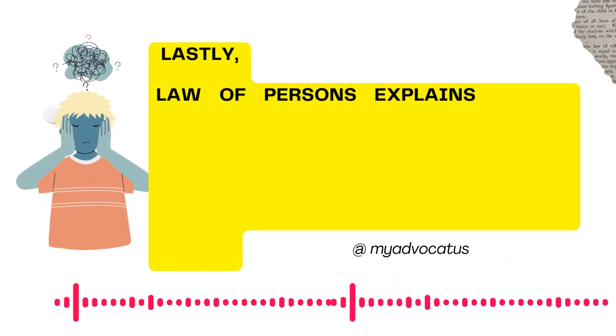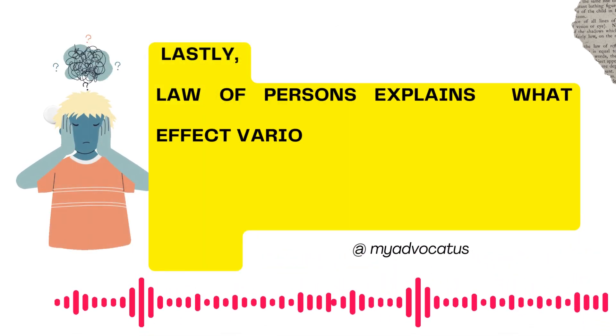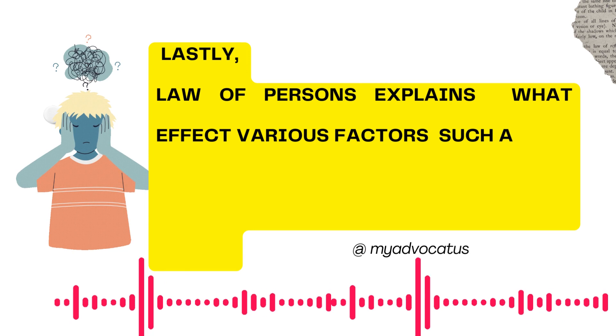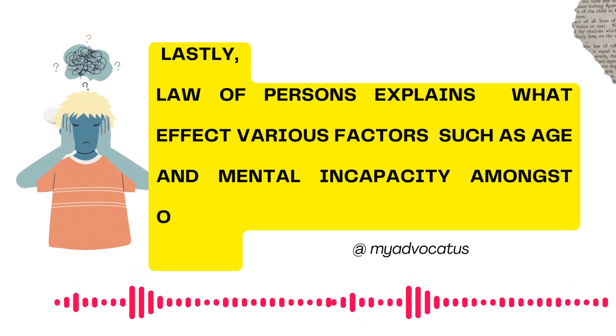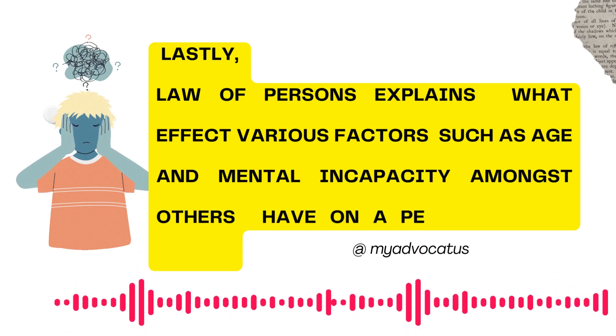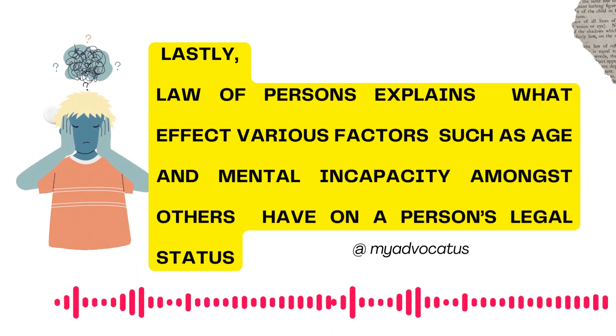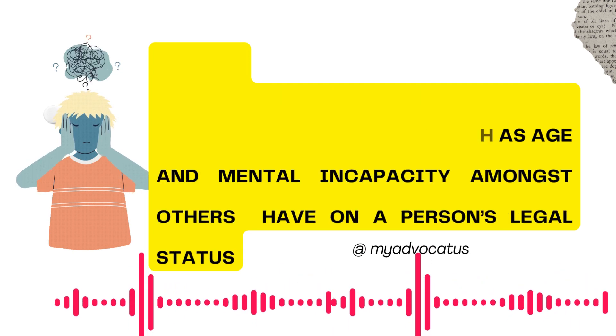Lastly, Law of Persons explains what effect various factors such as age and mental incapacity amongst others have on a person's legal status.